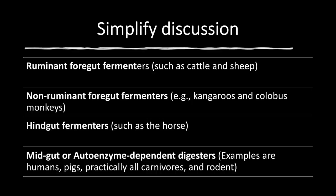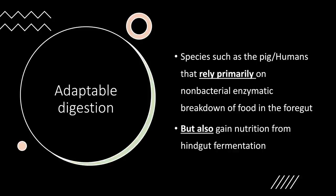I'd like to simplify the discussion by starting with the types of digestion systems in nature. We've got ruminant foregut fermenters like cows, goats, and deer with very complex stomachs; non-ruminant foregut fermenters like kangaroos and Columbus monkeys; and hindgut fermenters such as the horse. We are what we call mid-gut or auto-enzyme dependent digesters — practically all carnivores, pigs which are omnivorous, humans, and rodents. We have an extremely adaptable digestive tract. Species such as pigs and humans rely primarily on non-bacterial enzymatic breakdown of food — we make these enzymes ourselves — though we gain some nutrition from hindgut fermentation where we rely on microbiota to extract fuels, but it's a very low percentage in humans.